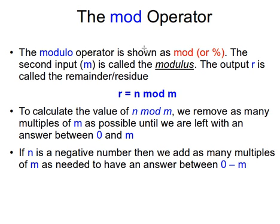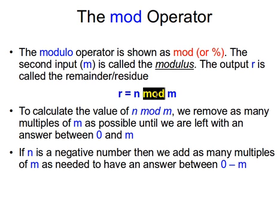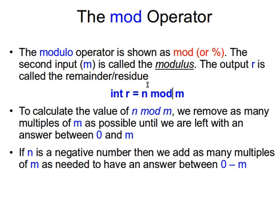If you do programming, you must have seen the mod operator. The mod operator is usually shown as 'mod' or '%'. In Java it's the percent sign; in some other languages like OCaml it's the keyword 'mod'. The notation is n mod m, where n is the input number, m is the modulus, and r is the remainder. In Java you'd write: int r = n % m. The output r is called the remainder or the residue.